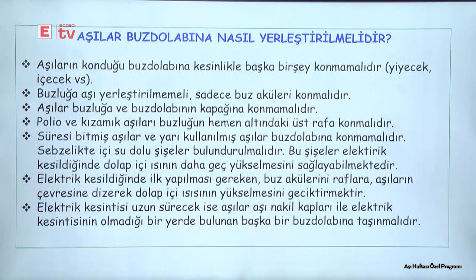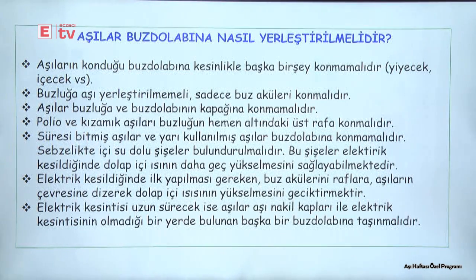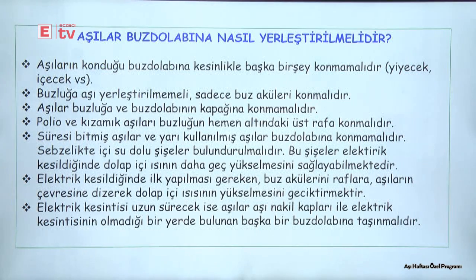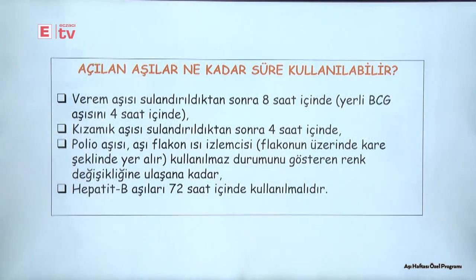Elektrik kesildiğinde buzlukta bulunan buz akülerinin aşıların çevresinde kullanılması gerekir. Aşıların şişeleri arasında 2'şer santim, kutular arasında 5'şer santim boşluk olmalıdır; bu, içerideki soğukluğun dolaşmasını sağlamak içindir. Elektrik kesintisi uzun sürecekse uygun transfer kaplarıyla aşılar başka buzdolablarına taşınmalıdır.